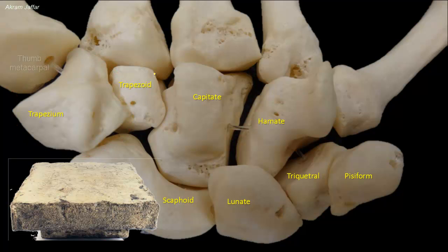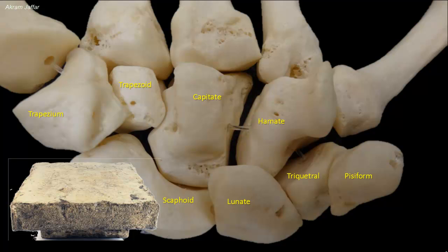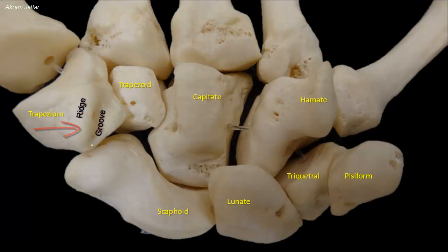To avoid confusion of the names, remember: trapezium is for the thumb. It has a distal articular surface which is saddle-shaped for the thumb metacarpal, thus forming a saddle variety of synovial joint. The trapezium has a prominent ridge or tubercle with a groove on its medial side, lying on the palmar surface. The tendon of flexor carpi radialis runs in the groove to be attached to the base of the second metacarpal bone.